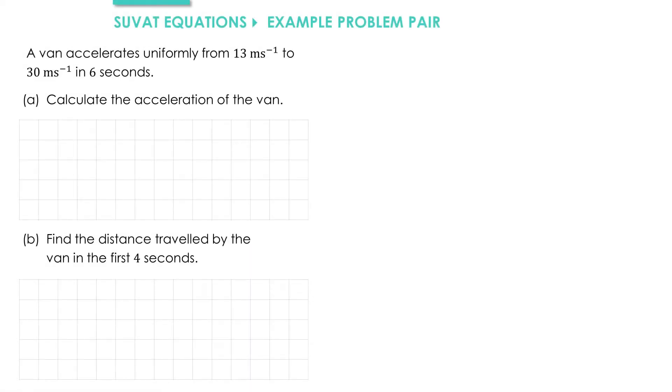In this example, a van accelerates uniformly from 13 meters per second to 30 meters per second in 6 seconds. In part A, we need to calculate the acceleration of the van.